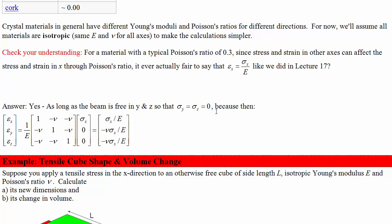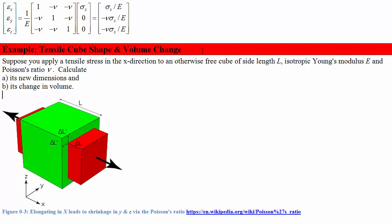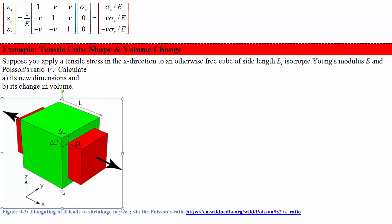Example: tensile cube shape change and volume change. Suppose you apply a tensile stress in the x direction to an otherwise free cube of side length L, isotropic Young's modulus E, and Poisson's ratio nu. Calculate its new dimensions and its change in volume. We have a cube being pulled in x, which shrinks a little in y and z and extends in x. Green is the original cube, red is the new rectangular shape.